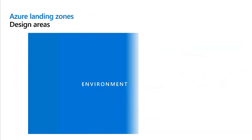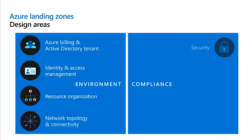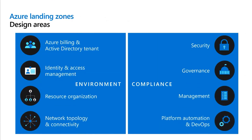We group the considerations and decisions you need to make when building your landing zone into what we call our design areas, and we split those into two core groups: the environment and the compliance. For the environment decisions, these are the elements you really need to get right first time — things like your Active Directory tenant, your identity and access management model, how you're going to organize your resources, and the network design and connectivity you want. Alongside those, we have the compliance elements: security, governance, management, and platform automation and DevOps. These are elements that are likely to mature and that you're going to iterate on over time as your organization and its skills grow.